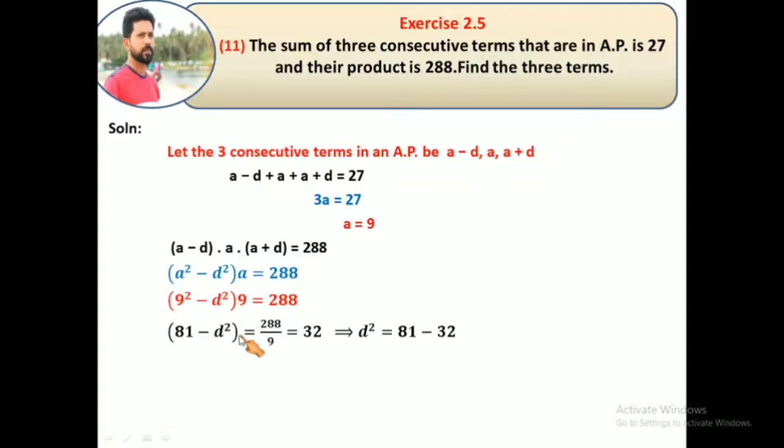So d² on the right side... rearranging: 32 = 81 - d², therefore d² = 81 - 32 = 49. So d equals plus or minus 7.